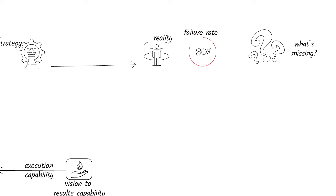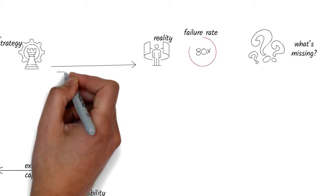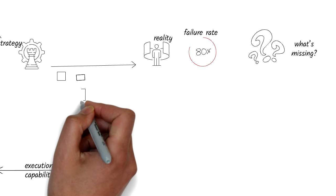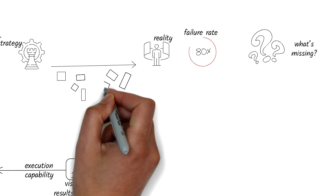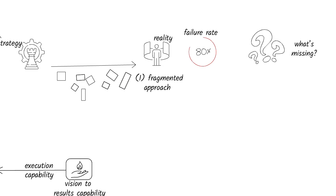So, why is strategy execution so daunting? What is missing, as you asked? It boils down to three key factors. The first is a fragmented approach. Organizations often treat the journey from strategy to execution as a series of disconnected steps rather than a unified process that brings teams together with transparency from end to end and accountability for the business outcomes delivered.